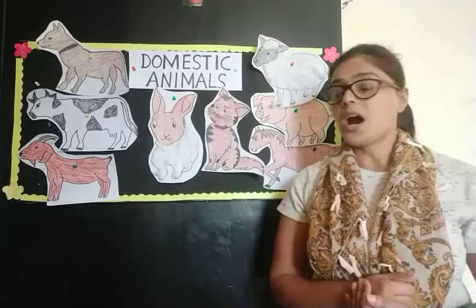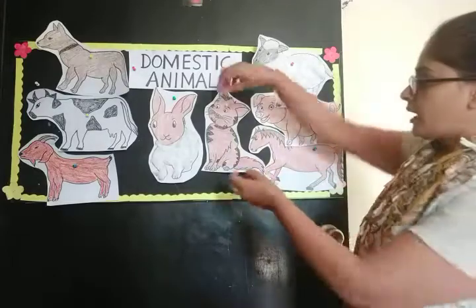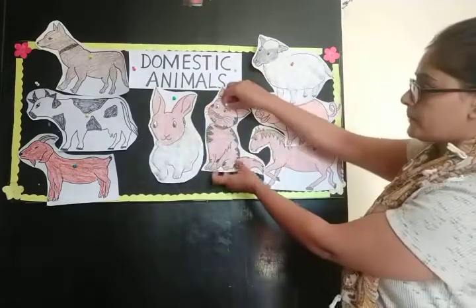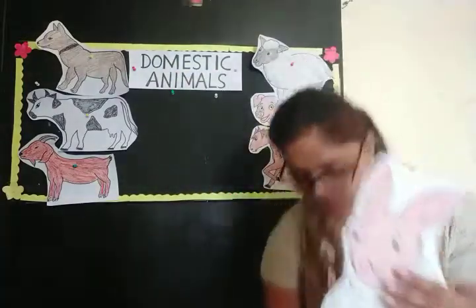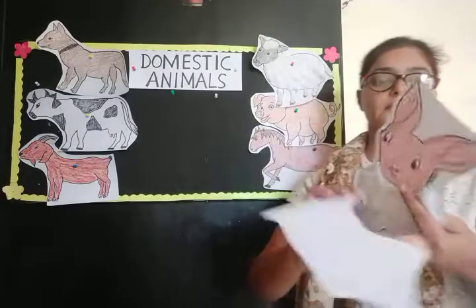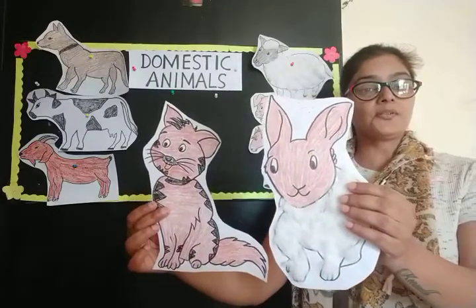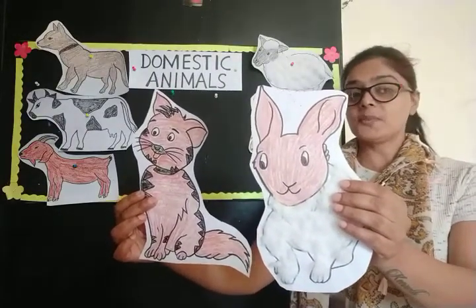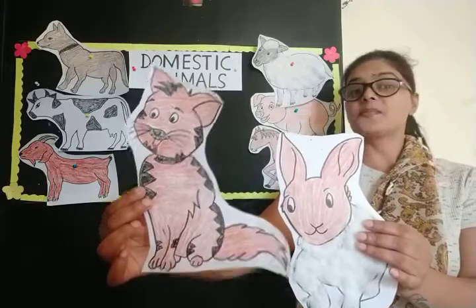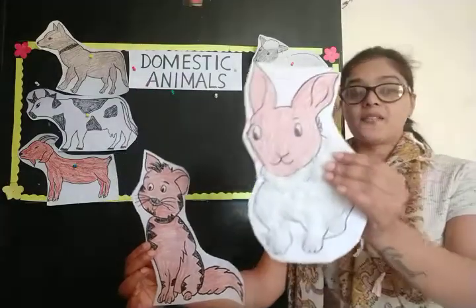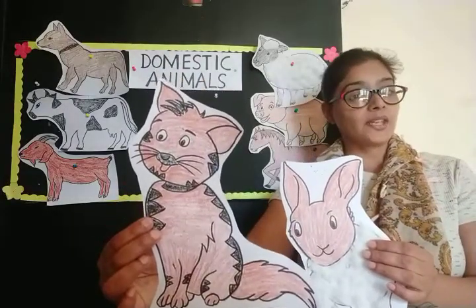So children, now I will show you some pictures and you have to tell me the correct name. Here you can see two pictures — cat and rabbit. Can you tell me, children, which animal drinks milk? Rabbit? No. Cat drinks milk. Yes. Rabbit eats carrot, and cat drinks milk.